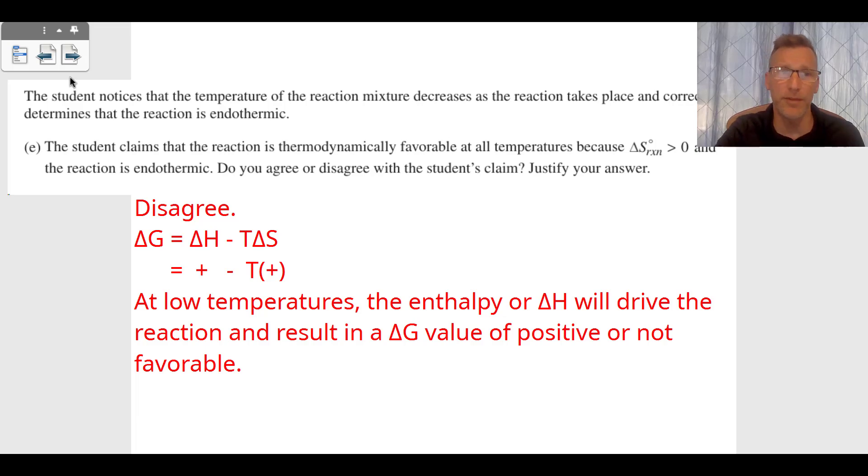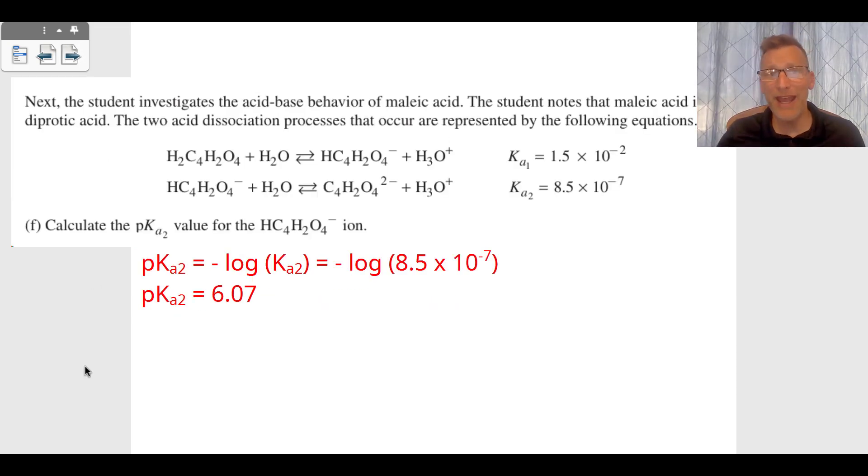Problem F goes into an acid-base reaction. Maleic acid has two protons—it's H₂C₄H₂O₄—so it can donate those two protons. We have a Ka1, we have a Ka2. We want to know what the pKa2 value is, which means we do the negative log of Ka2, negative log of 8.5 × 10⁻⁷, which gives us a pKa2 of 6.07.